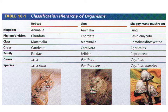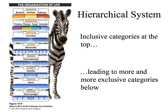Classification is based on similarities of organisms — the more similar they are, the more of these categories will be the same for two different organisms. Our organization system is hierarchical, with inclusive categories at the top leading to more and more exclusive categories at the bottom. By the time we reach the species level, we are talking about one specific type of organism.